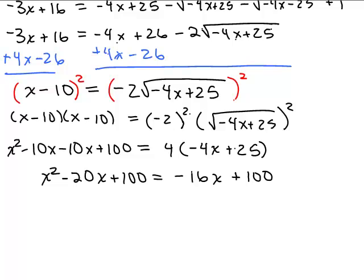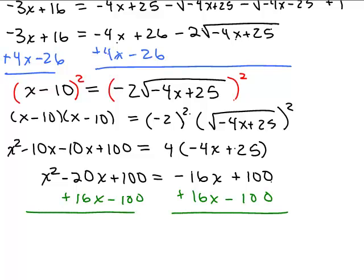So we're nearing the finish line. Again, we want to add 16X minus 100 to both sides. So I have X squared minus 4X equals 0.